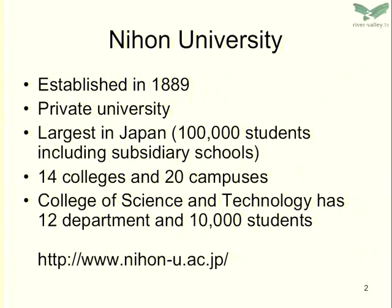Before my talk, I would introduce my university. Nihon University was established in 1889, and it's a private university and the largest university in Japan. We have 100,000 students, including high school students and elementary school students. We have 14 colleges and more than 20 campuses spread mainly around Tokyo. Our college is the College of Science and Technology, a single college with 10,000 students.